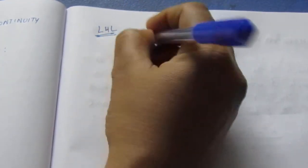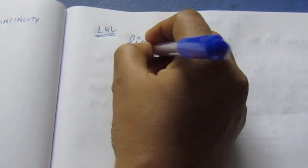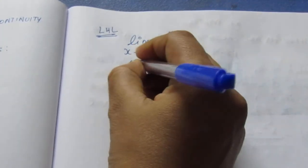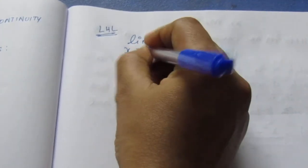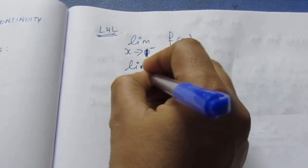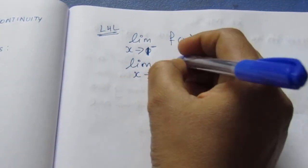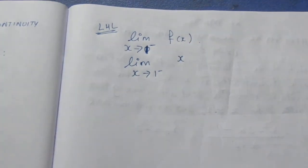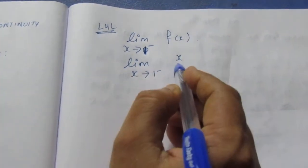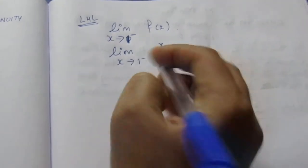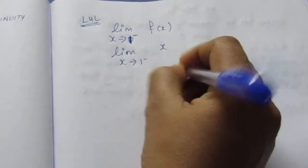Left-hand limit: limit x tends to 1 minus of f(x). On the left-hand side, f(x) equals x. We substitute x equals 1 and get the value 1.